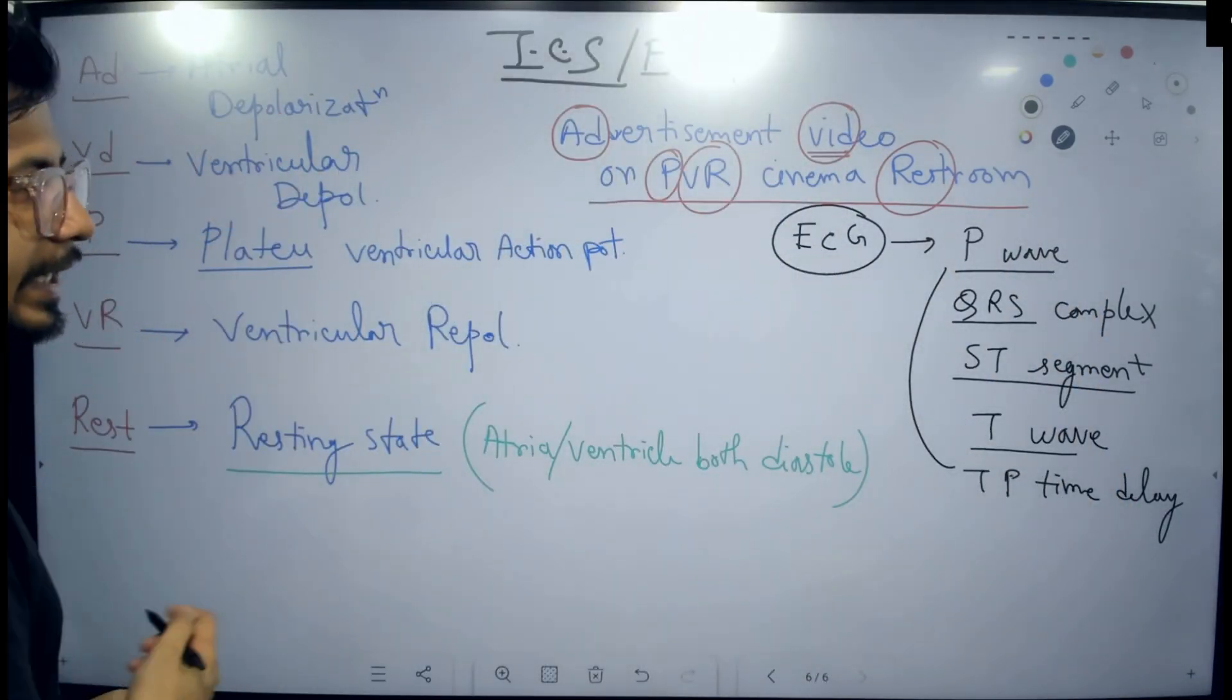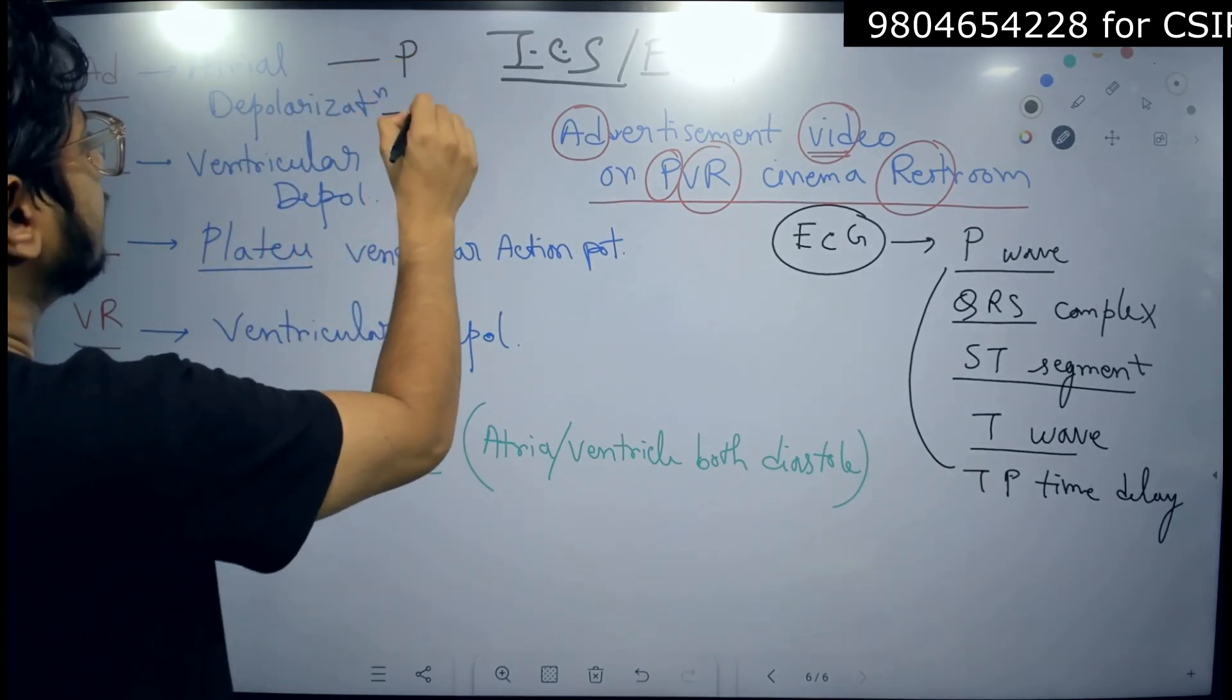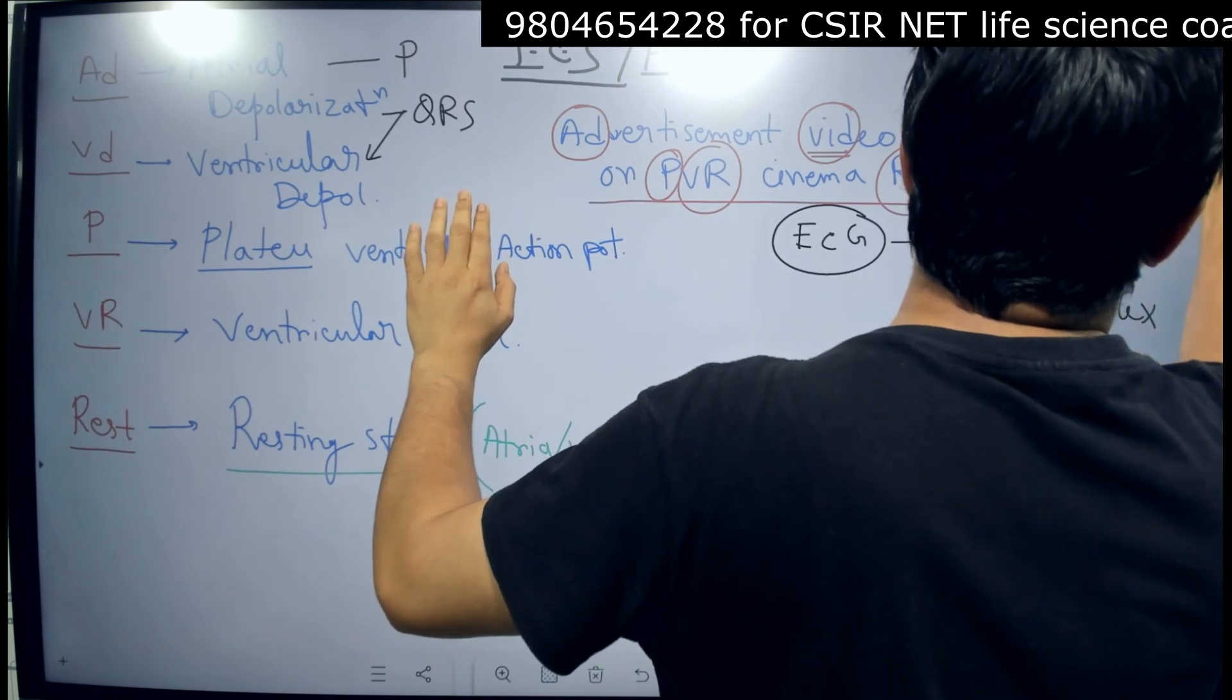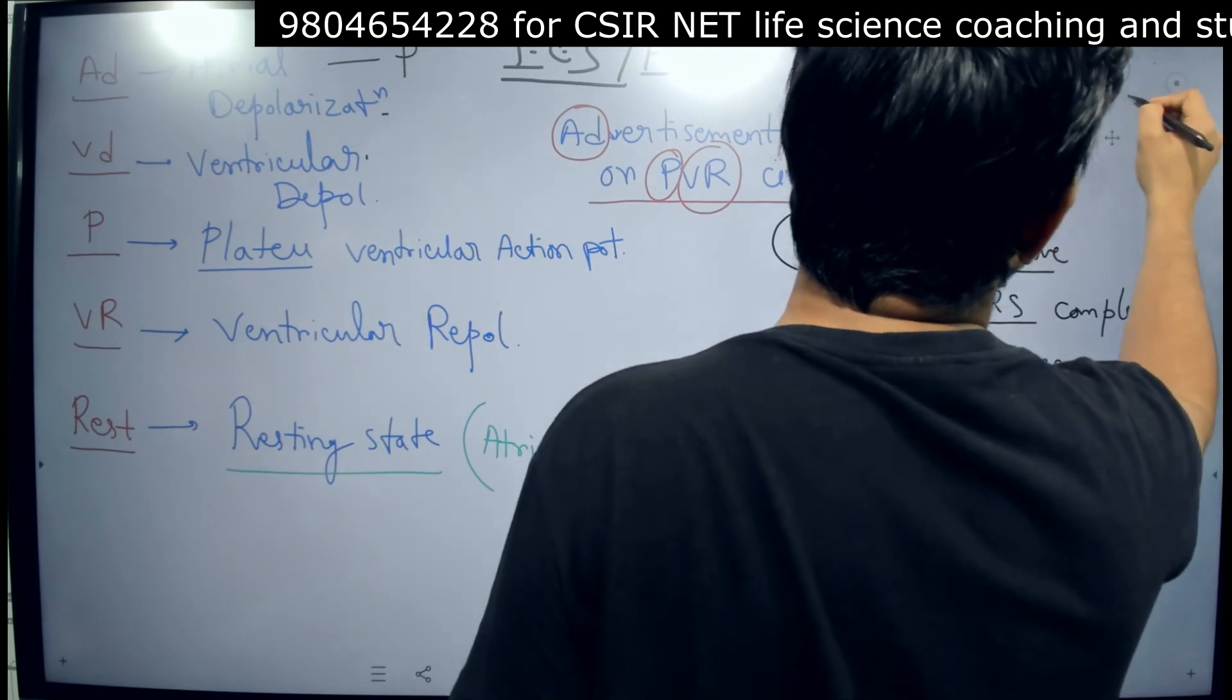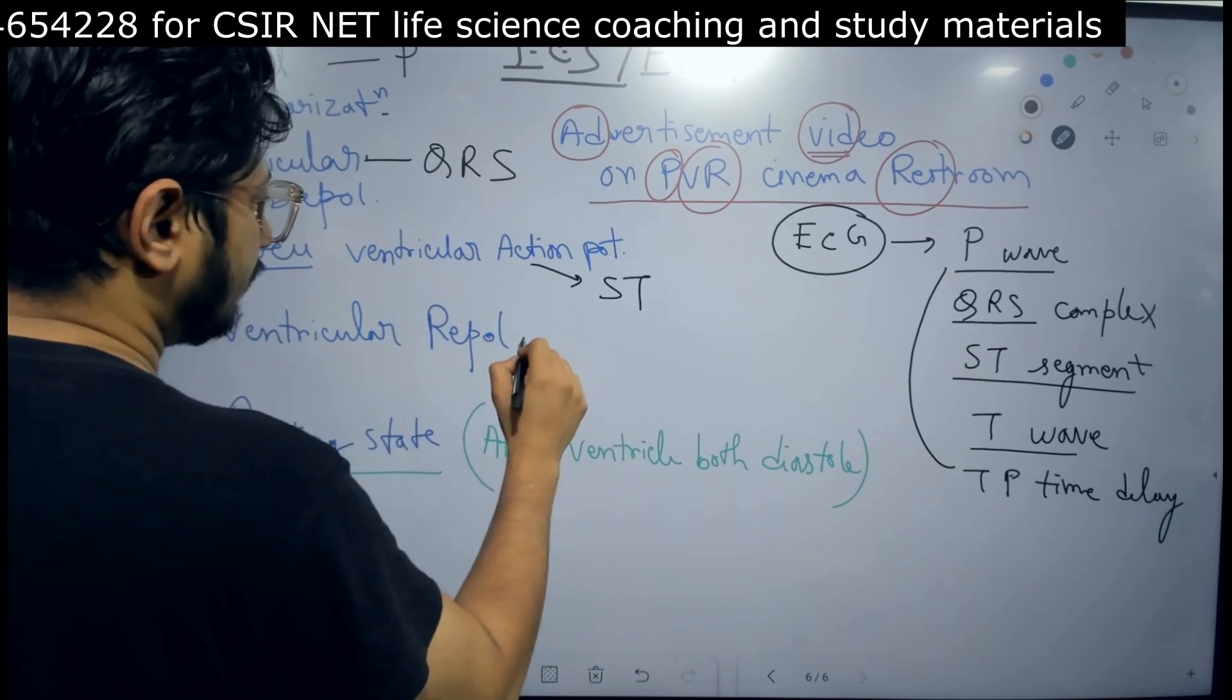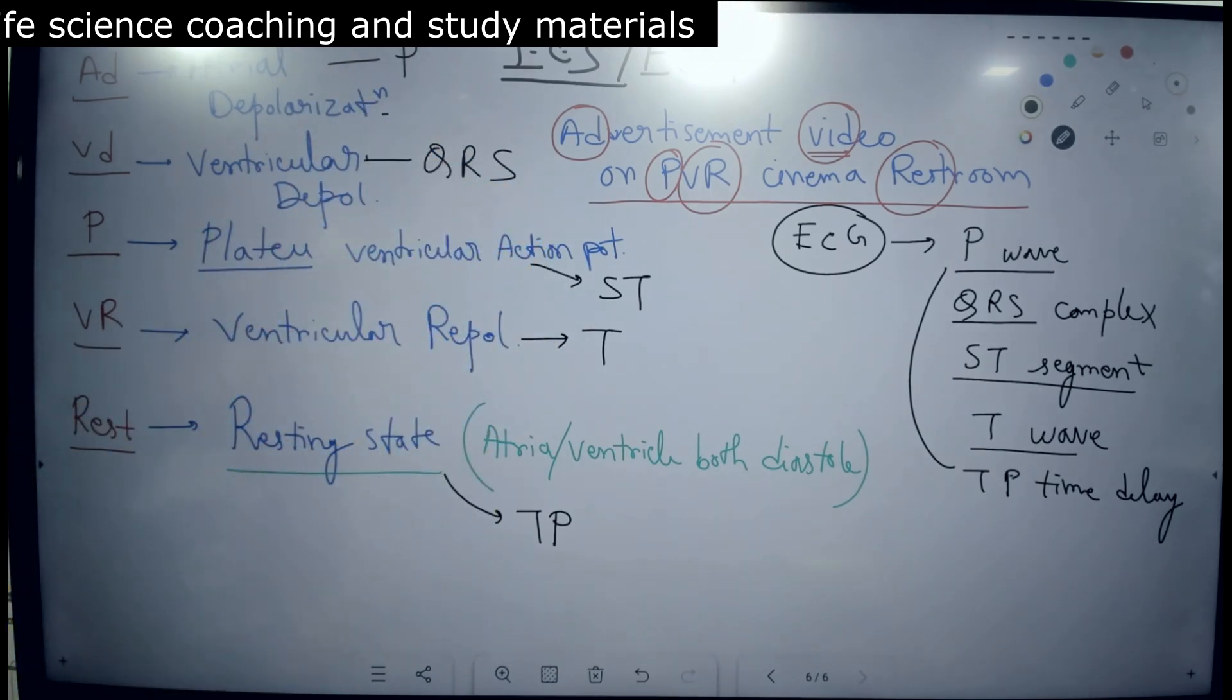Now, I am going to assign it with this. We have 1, 2, 3, 4, 5. Now, just place them. This is P, this is QRS, this is ST segment. VR stands for T wave. And this is for TP. P, QRS, ST, T, TP.